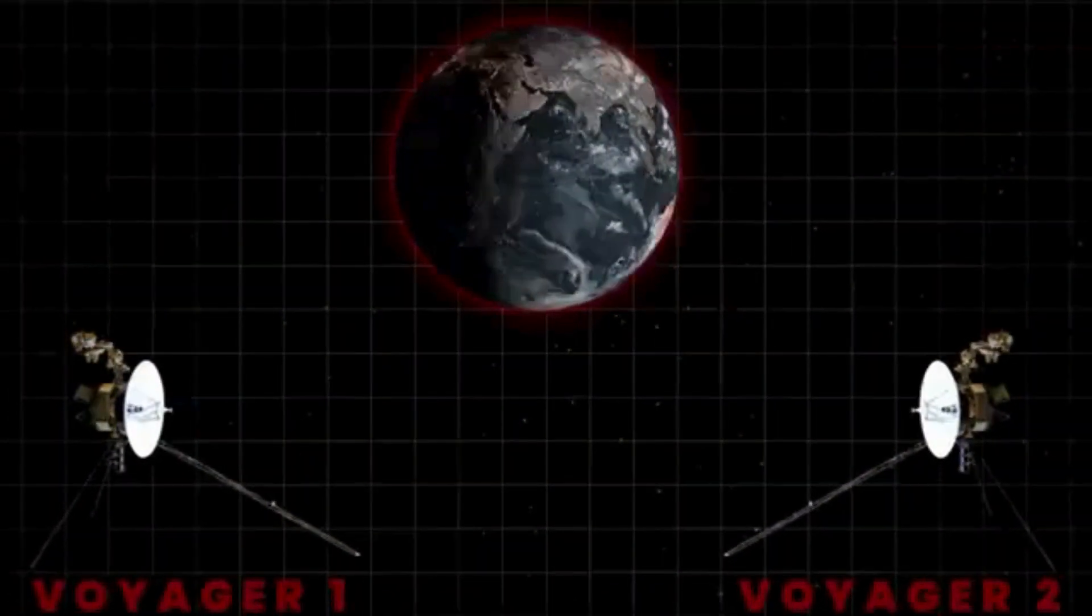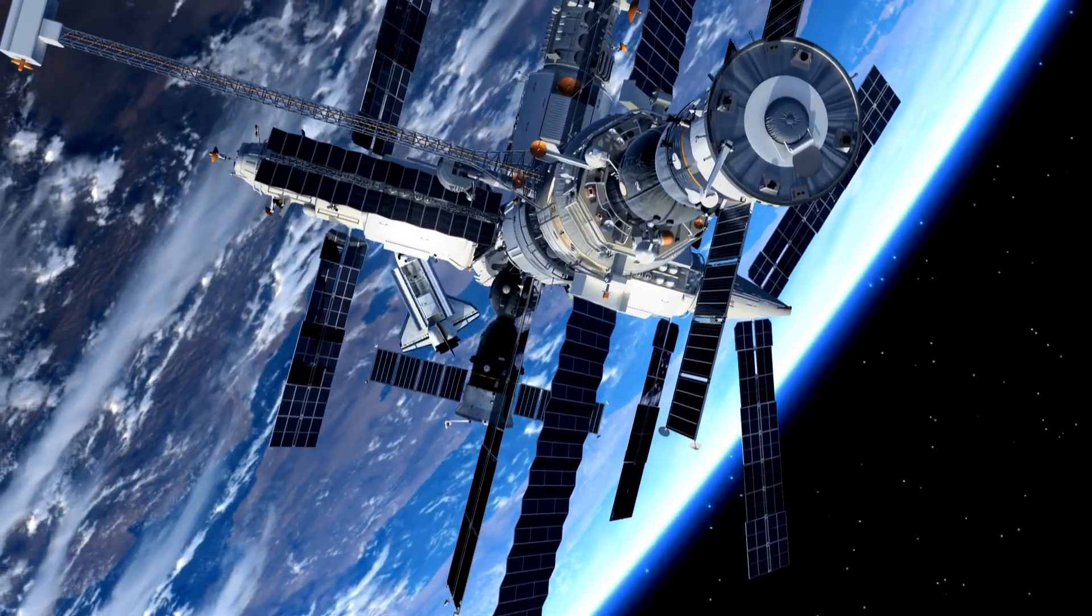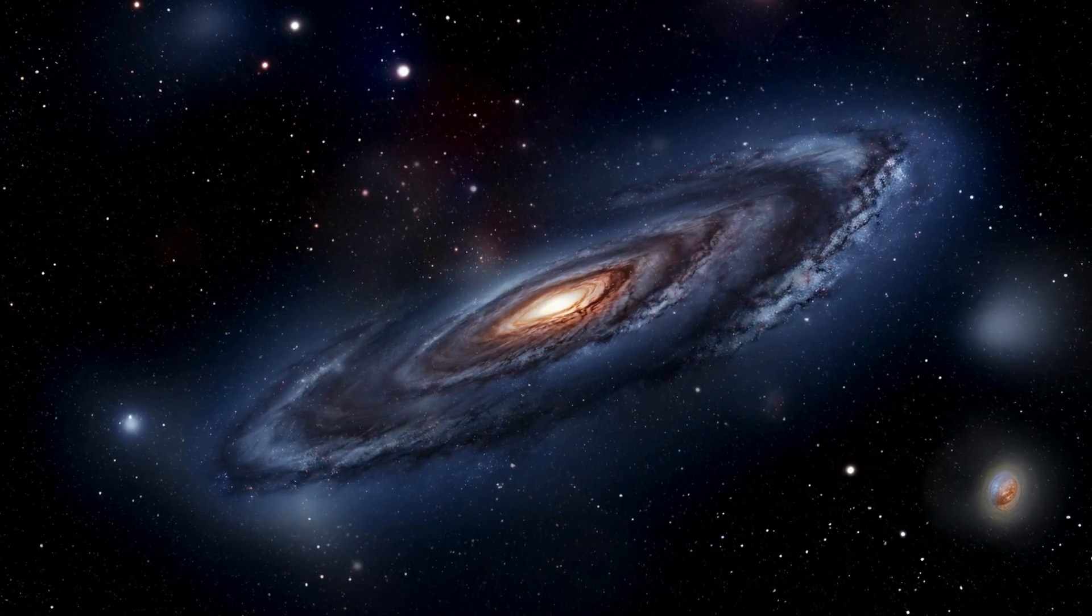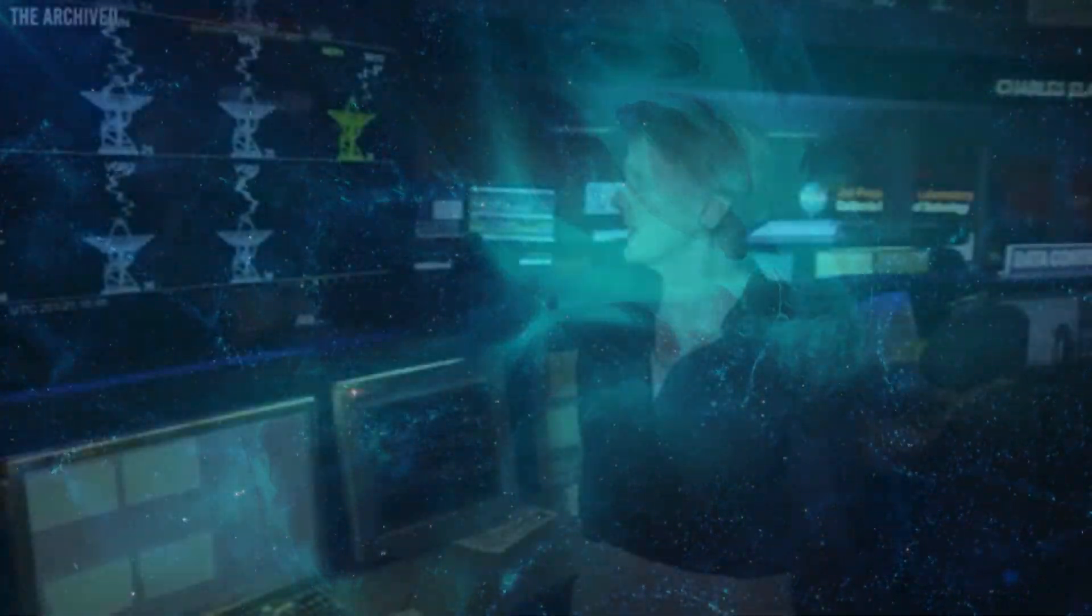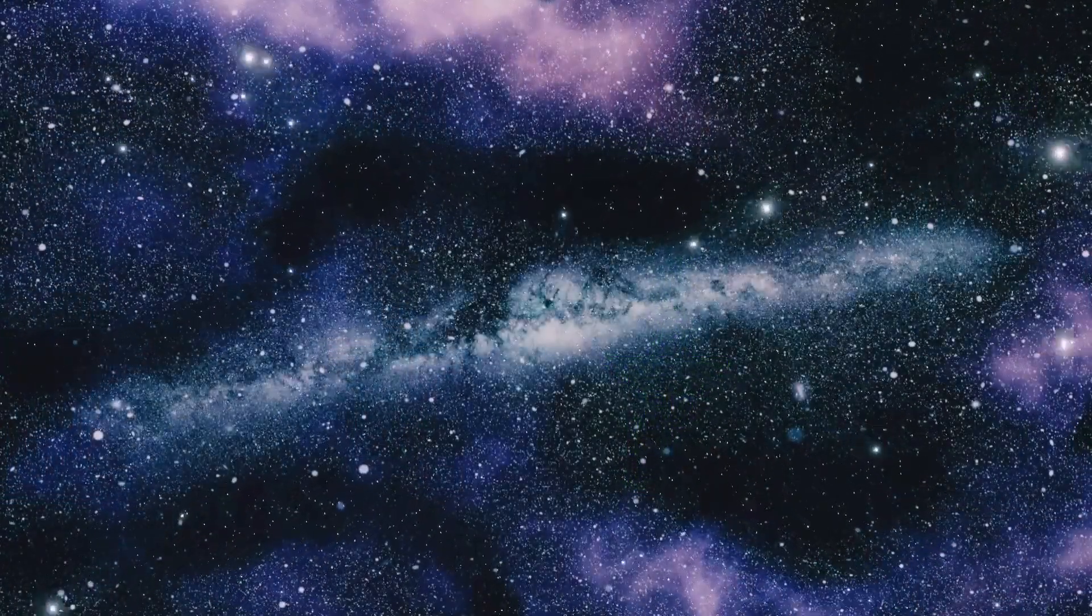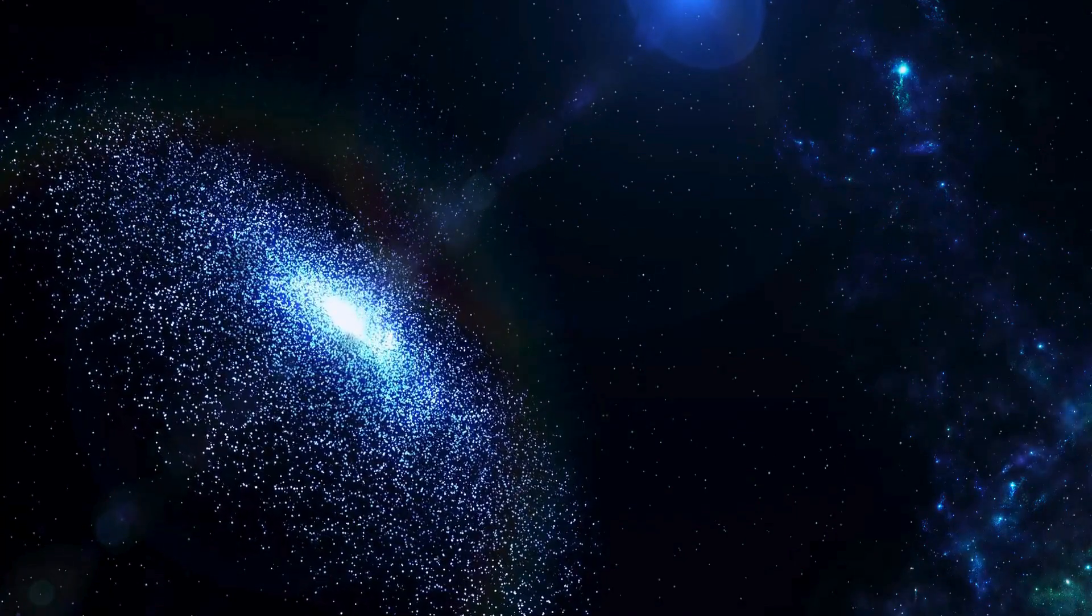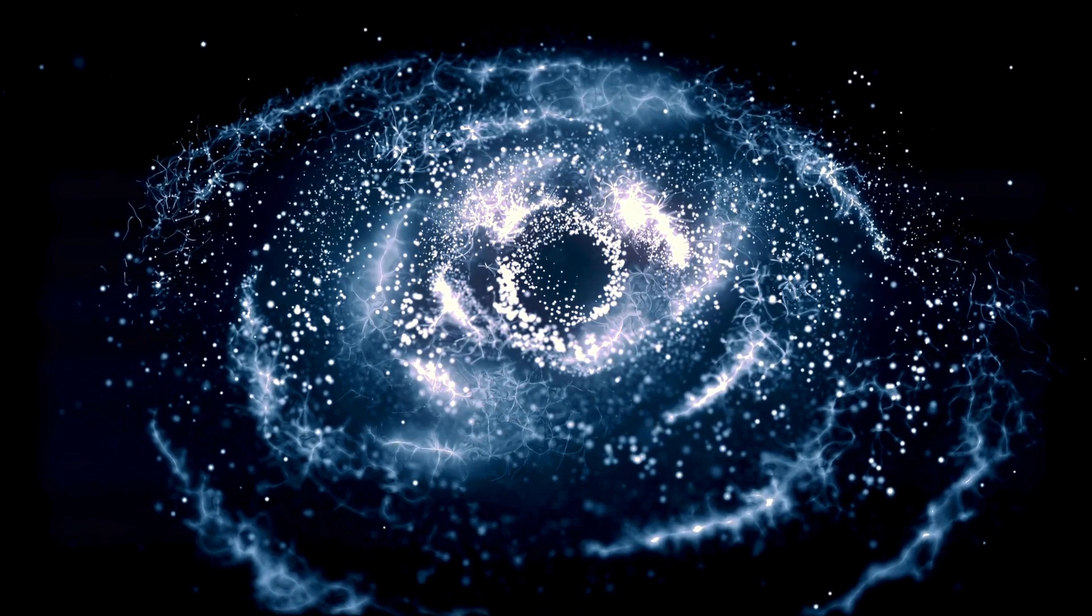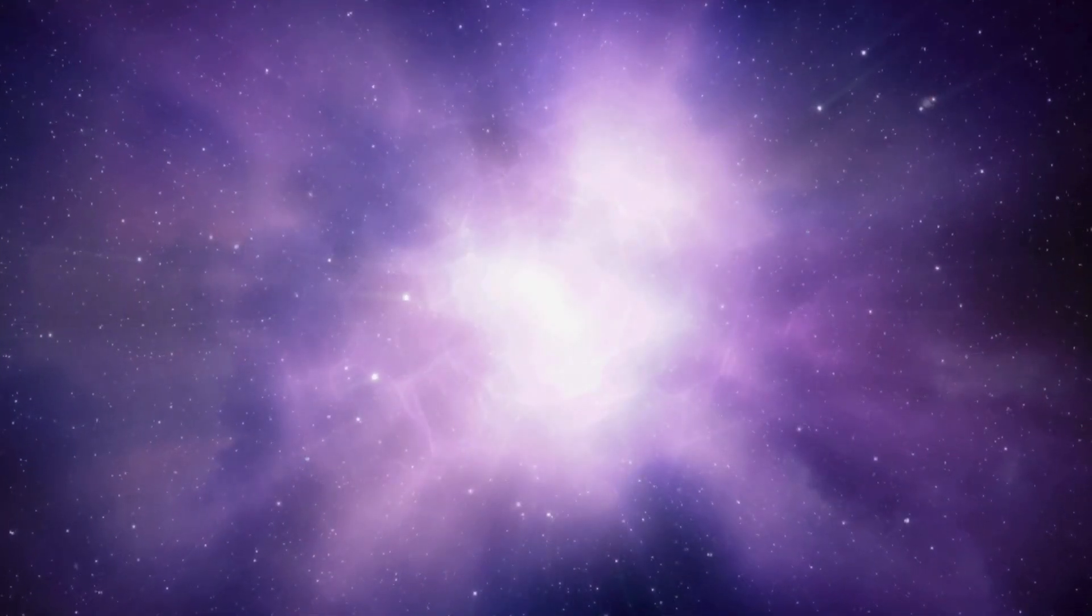Beyond the planets, into interstellar space. After completing their planetary flybys, the Voyagers embarked on a new mission—exploring the boundary between the Sun's influence and interstellar space. In August 2012, Voyager 1 became the first human-made object to cross the heliopause, the boundary where solar wind gives way to the interstellar medium. Six years later, in November 2018, Voyager 2 followed suit. The data surprised scientists. The temperature in the boundary region was much lower than expected, and the interstellar magnetic field was stronger than predicted. The Voyagers also detected a curious cosmic hum at around 3 kHz, possibly caused by background plasma vibrations.